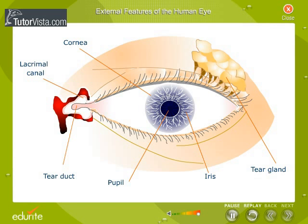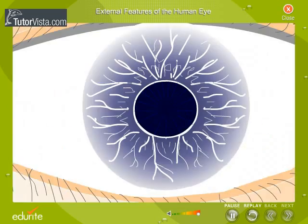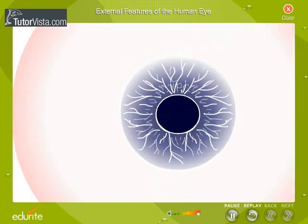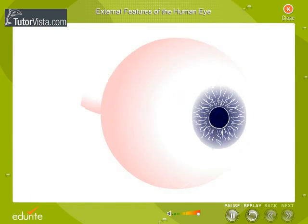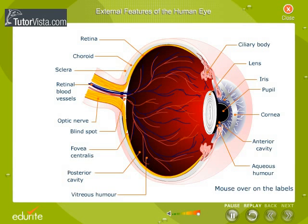The eye is nearly spherical in shape with a slight bulge in the front part. It is about 2.5 cm in diameter. Carefully analyse the different parts of the eye and mouse over on each label for more information.